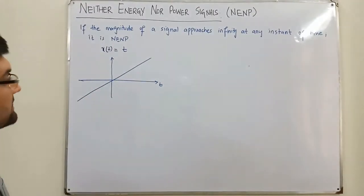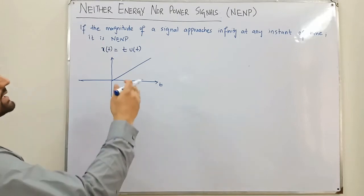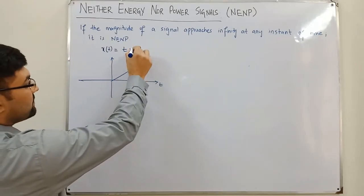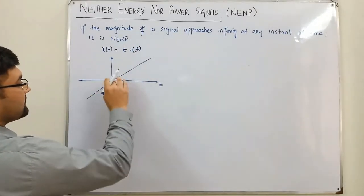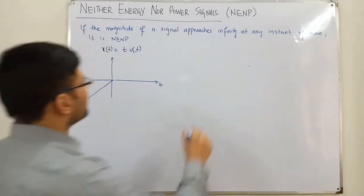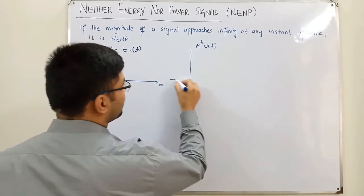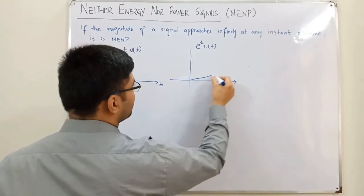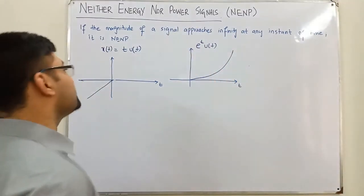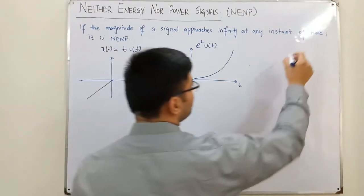Similarly, if you multiply t by u(t), you get only the positive side, which still reaches infinity — again a neither energy nor power signal. Multiplying by u(-t) gives only the negative side, also reaching infinity — again neither energy nor power. If you have e^t multiplied by u(t), considering only the right-hand side, the exponential reaches infinity as time approaches infinity, so that is also neither energy nor power. Similarly for 1/t.